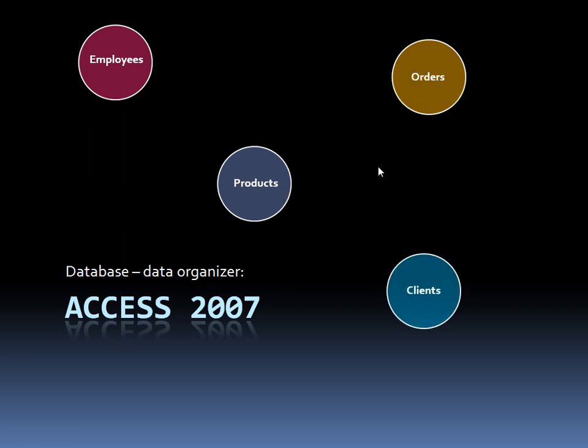And then finally, we have the clients themselves. We have the company's name, or the first name and last name of the client, their address, their shipping address, maybe their credit card information on file — things like that.